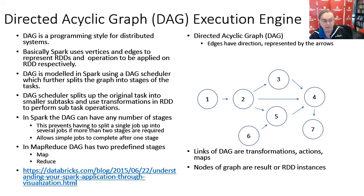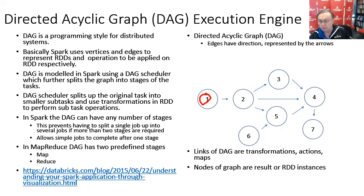Here we have our favorite dataflow graph. Starting at node one, we do some action to produce two — that could be a map in RDD. Then we perform three different actions on two and produce three different datasets: three, four, and five. There is also an RDD which is six, which goes to five as well. Five takes the results of two and six, and sends output to four. Four receives from two and three, and finally produces seven, which is the answer — an RDD from which the answer can be obtained.